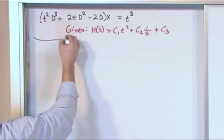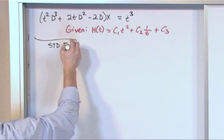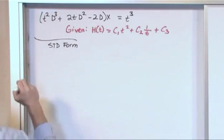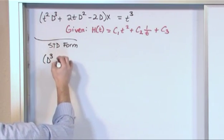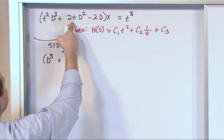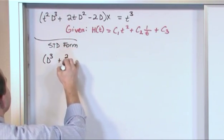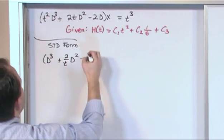Now the first thing we need to do is put it in standard form. So in front of the d cubed we have something there so we don't want that. So we divide by t squared. So what we're going to get is d cubed plus if we divide this by t squared what we're going to get is 2 over t d squared minus